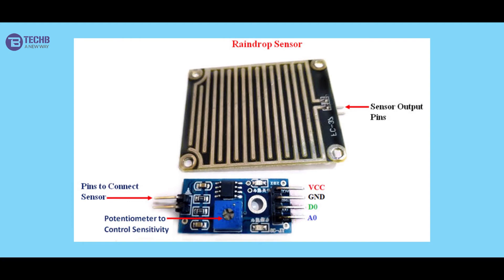A0 is the analog value in the form of voltage. If there are more water drops, the voltage will be less. D0 is the digital output, and its variable is adjusted in the form of 0 and 1.